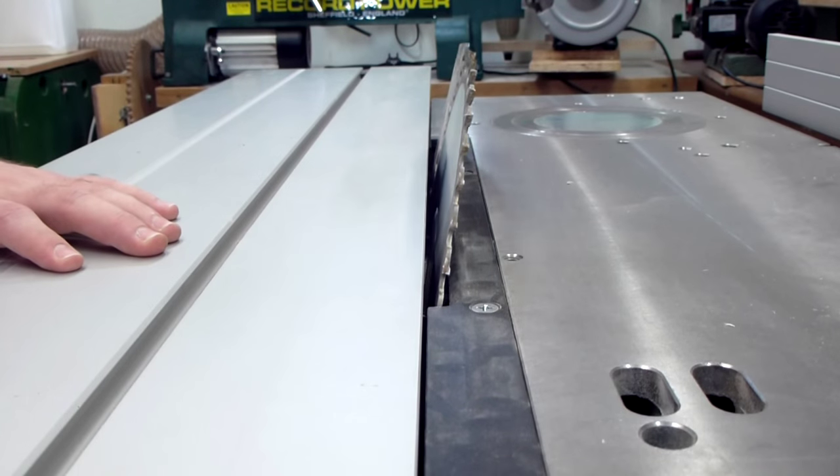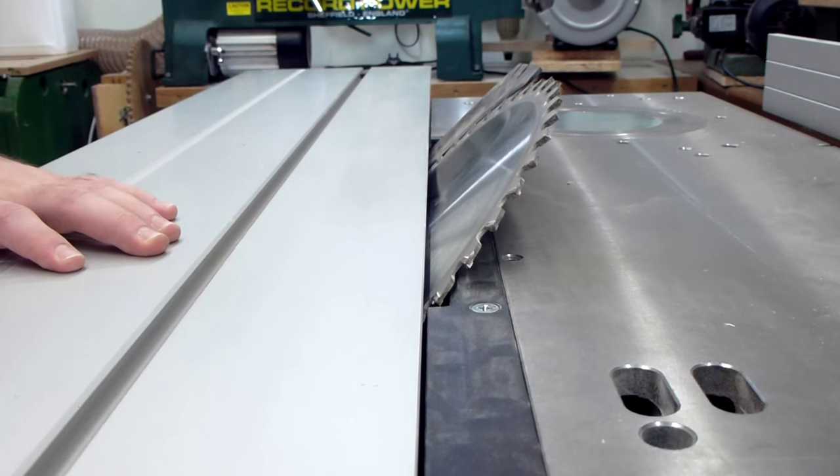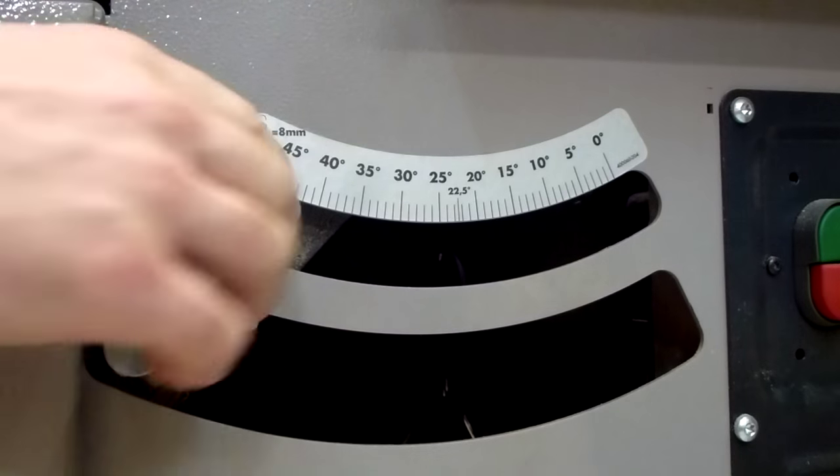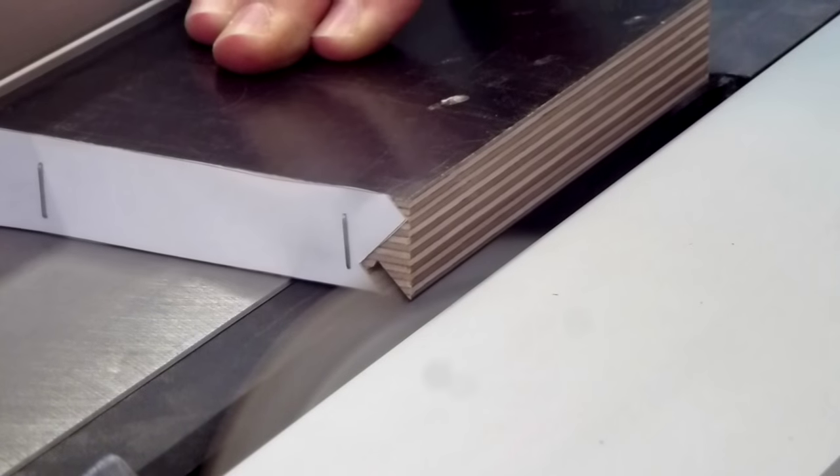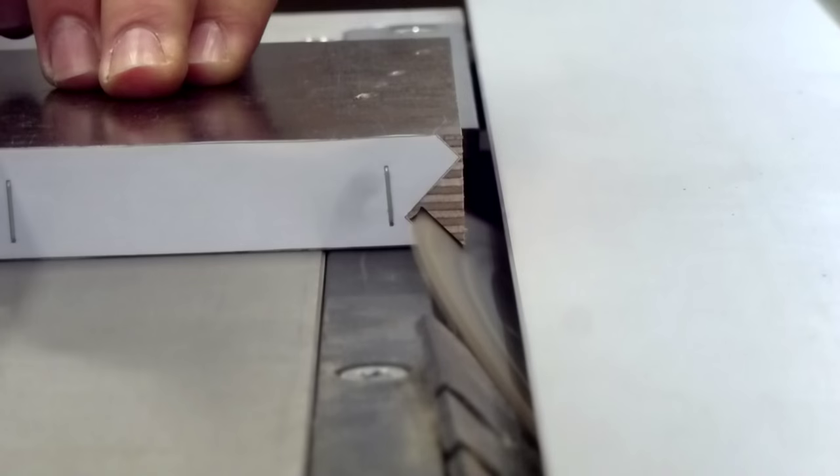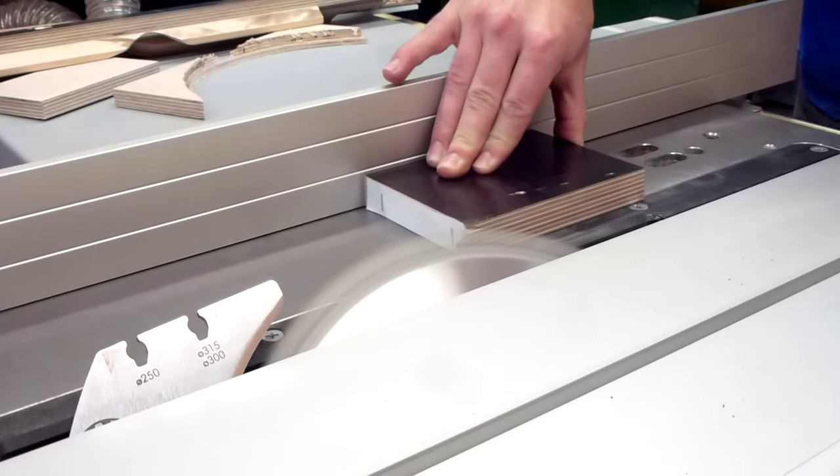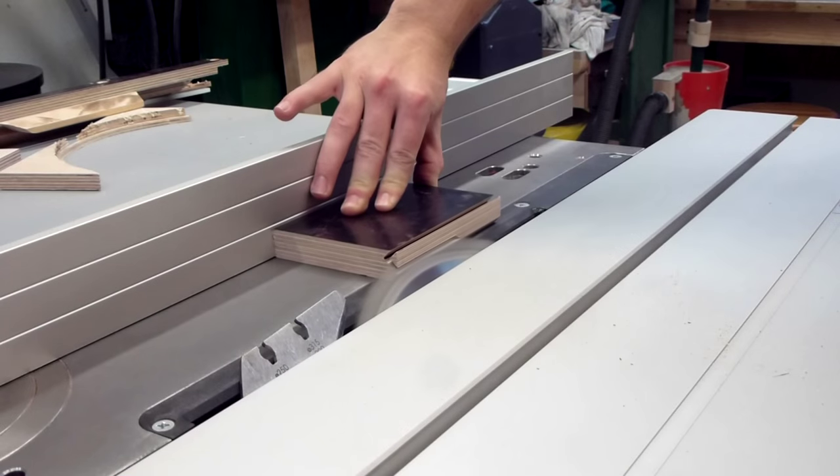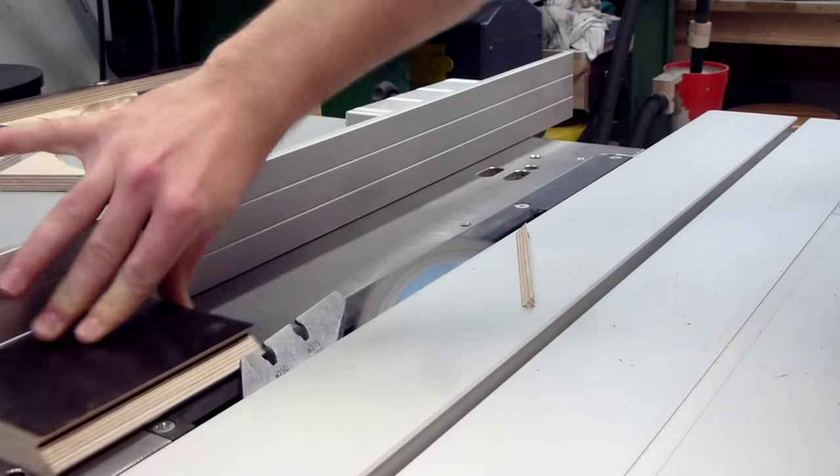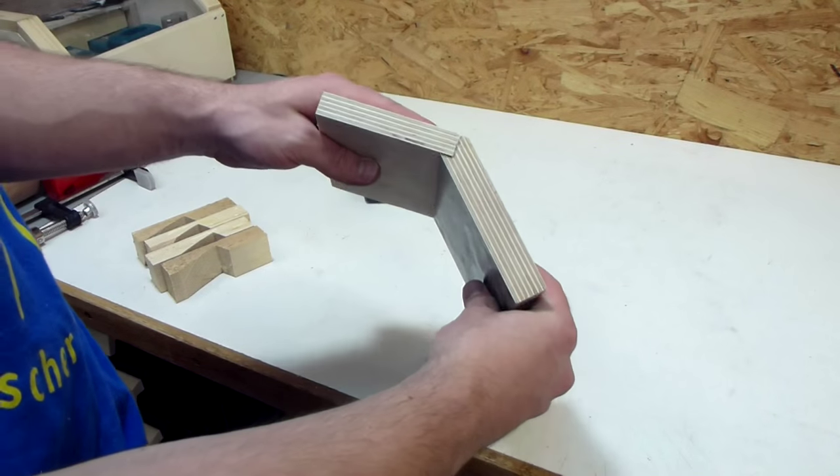All these cuts are at 45 degrees, so I of course tilted the blade. Then I simply set the blade height and fence so that I could cut out the shape. As you can see it fits together quite nicely.